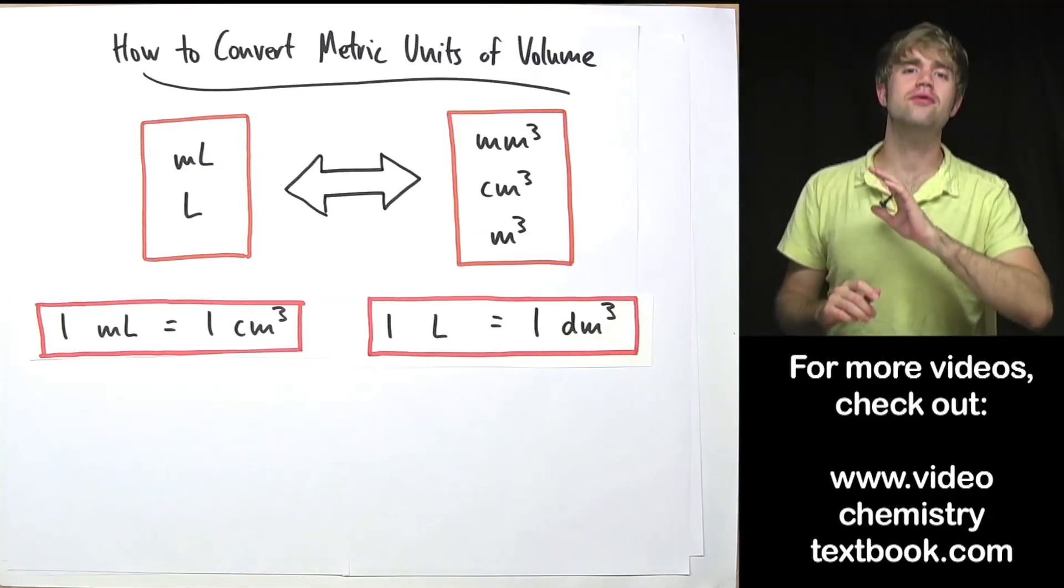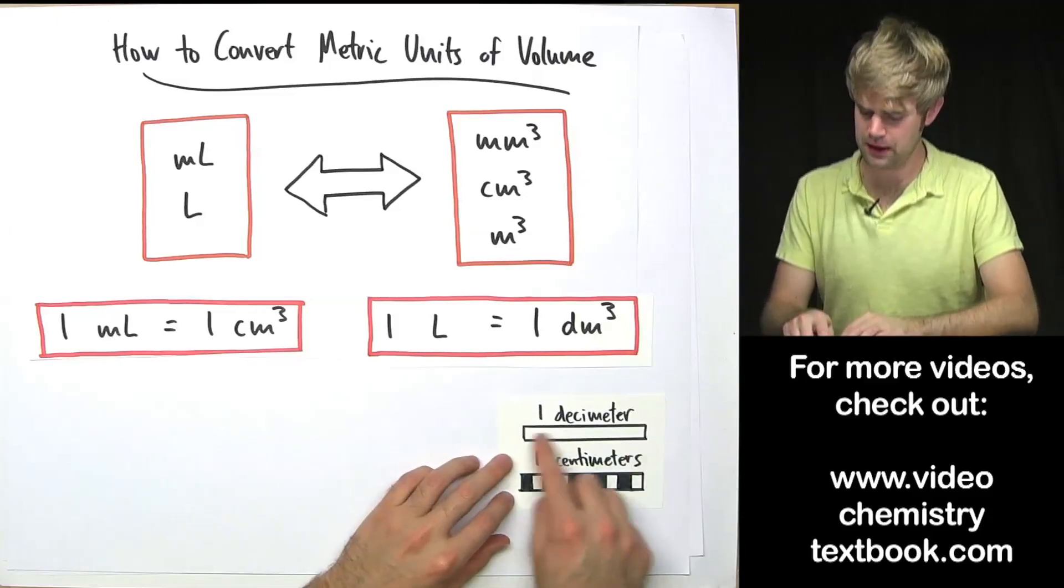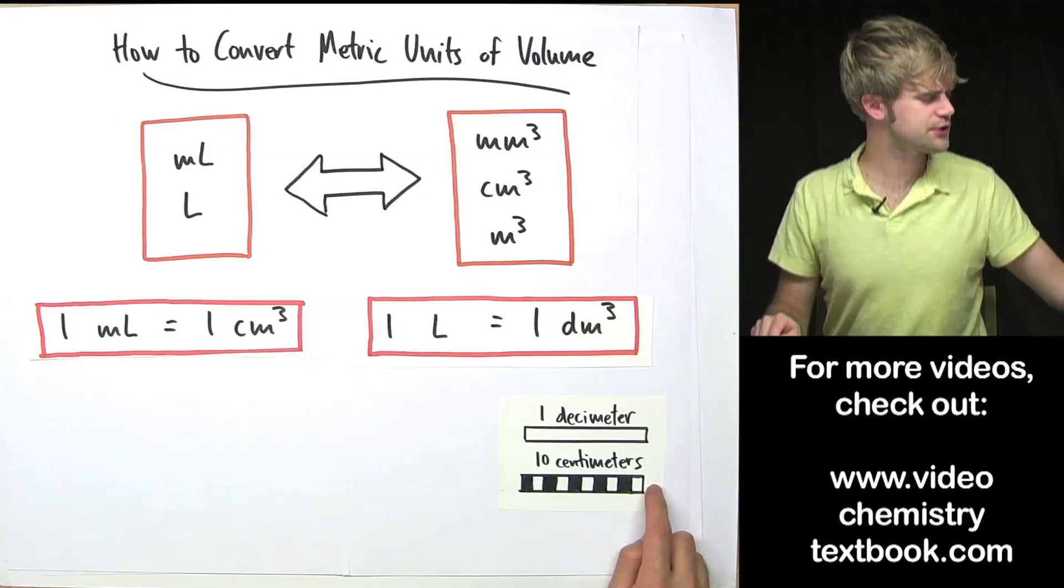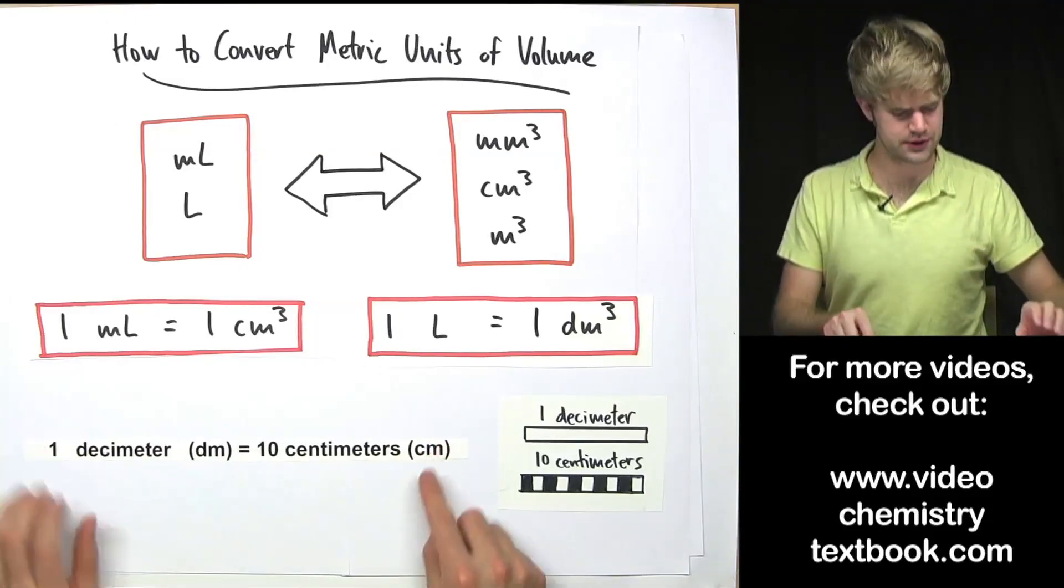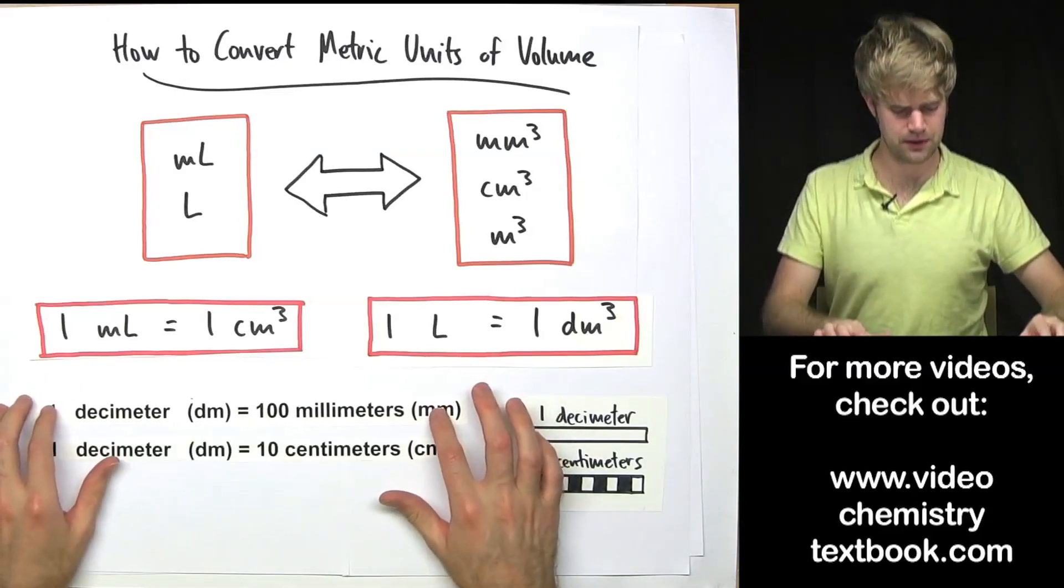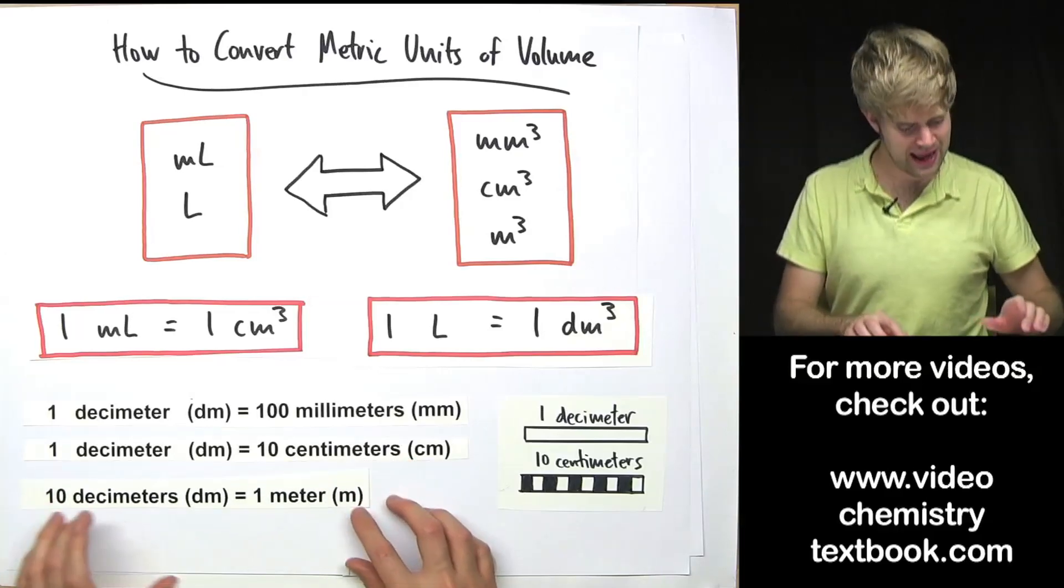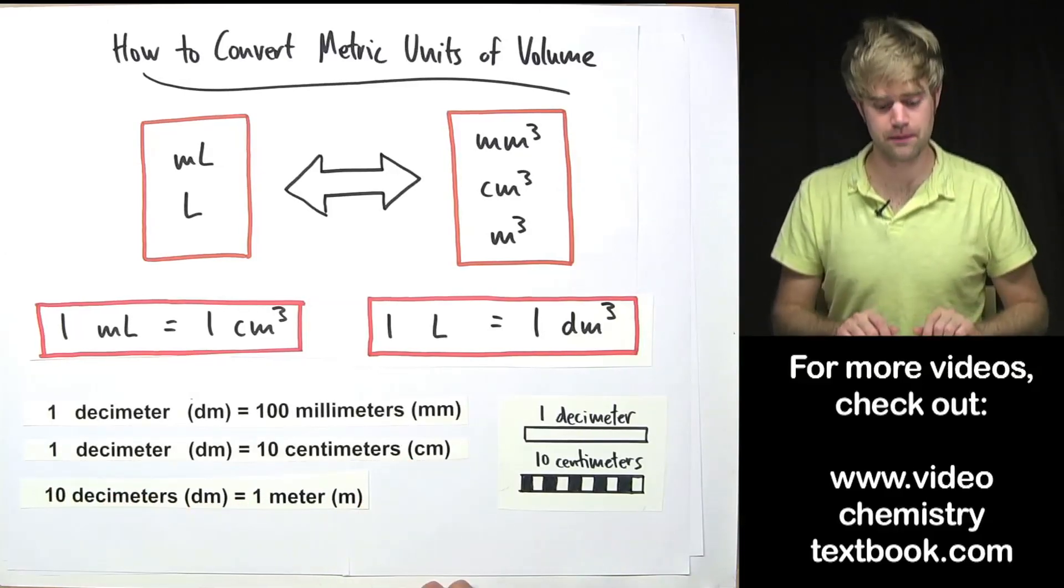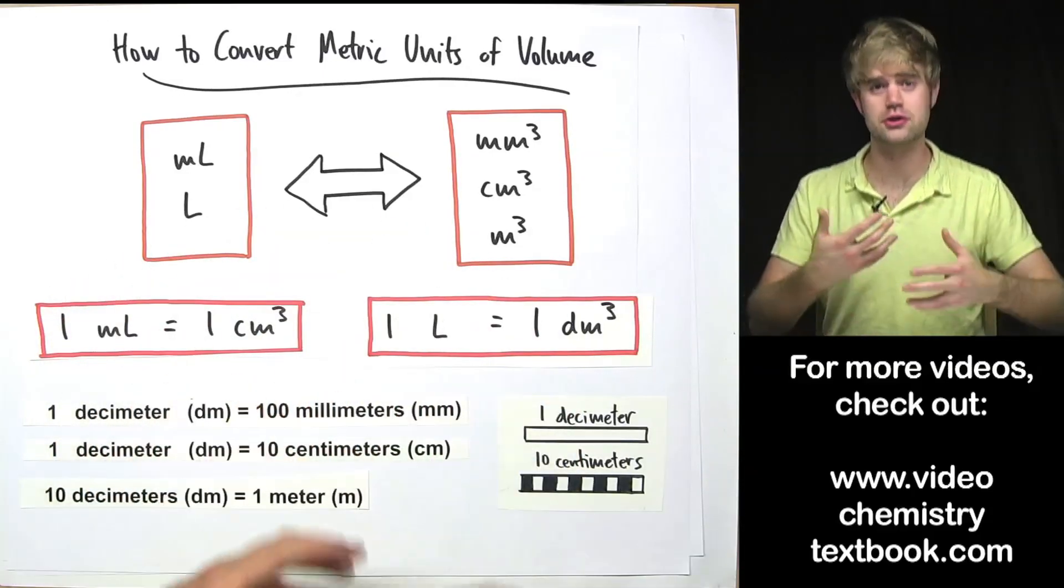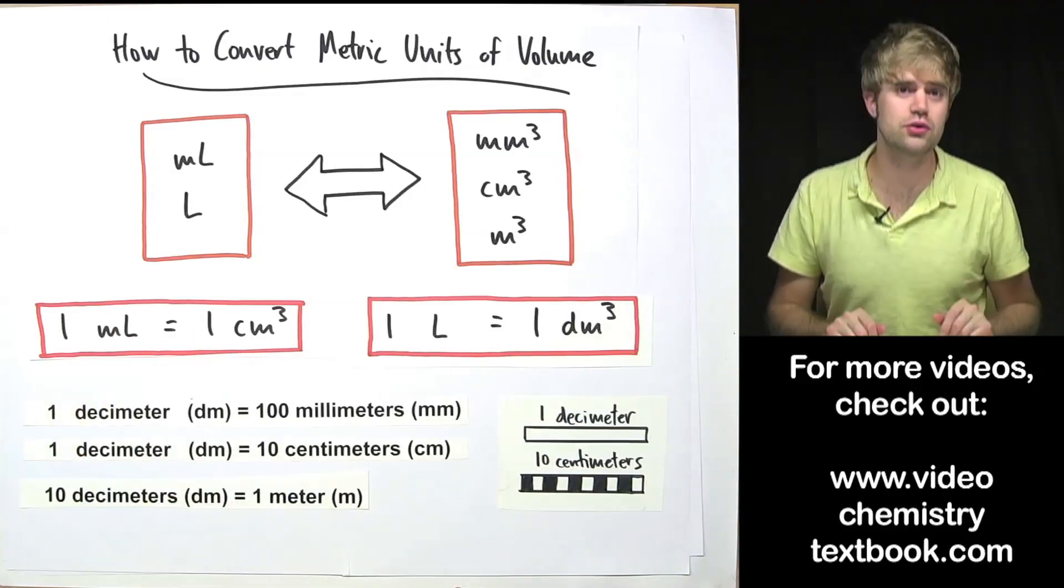Now, I'm guessing that you have never even heard of a decimeter before. So here's what one looks like. Here's one decimeter and it equals 10 centimeters. We can also say that one decimeter equals 100 millimeters, and we can say that 10 decimeters when put together equals a meter. Any of these relationships here can be used to build conversion factors. So let's use this information to do a few example problems.